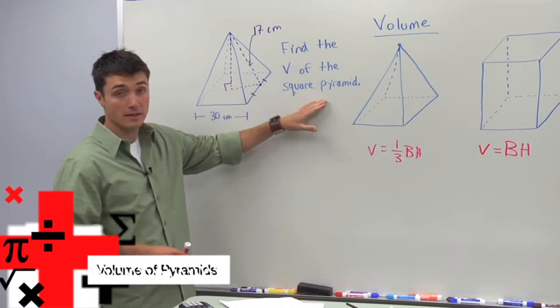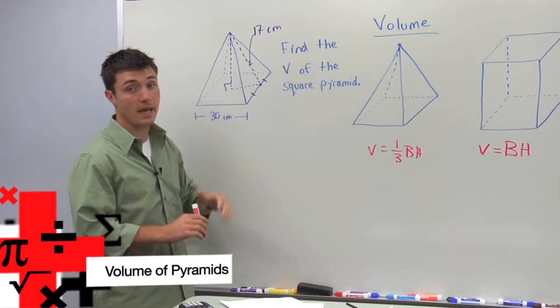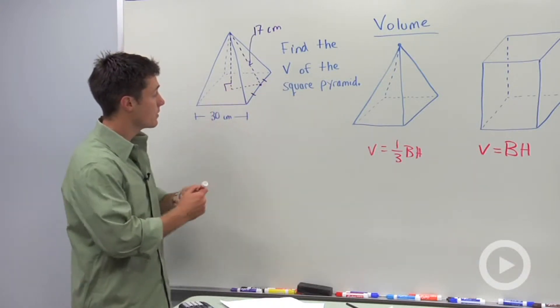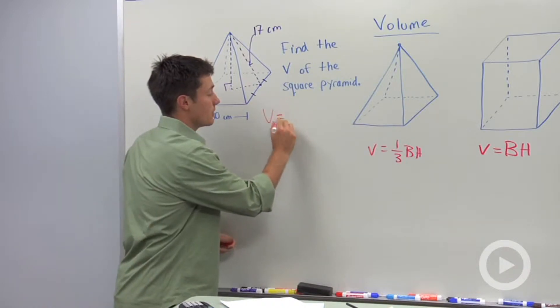In this problem, you're being asked to find the volume, that is, capital V, of the square pyramid. So we have a square pyramid here, and we're going to start by writing our volume formula.